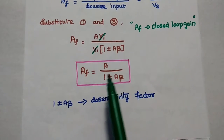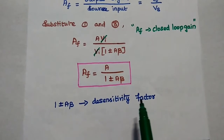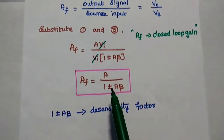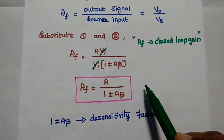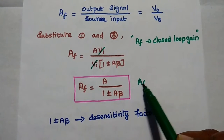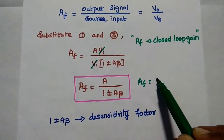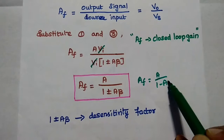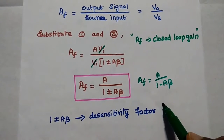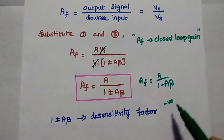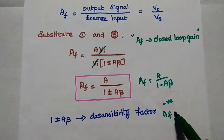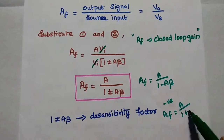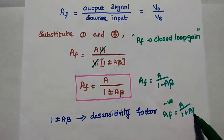The denominator value (1 ± A·beta) is denoted as the desensitivity factor. This is the general formula. For positive feedback, the gain is AF = A / (1 − A·beta). For negative feedback, the gain is AF = A / (1 + A·beta).